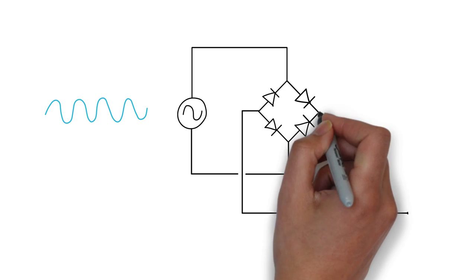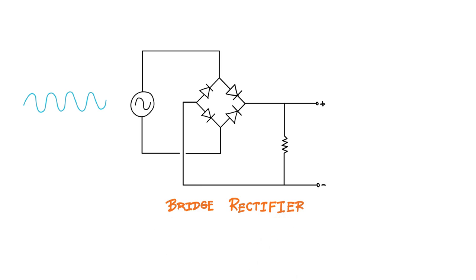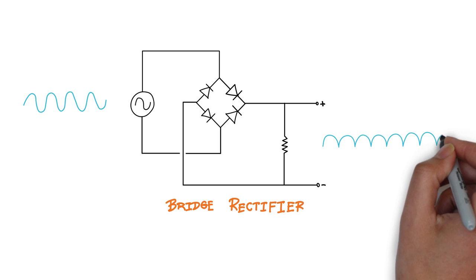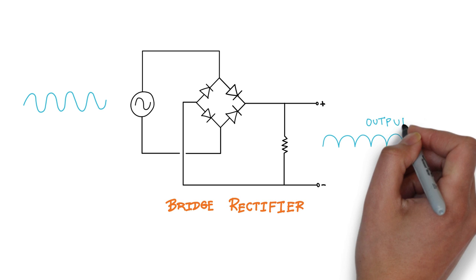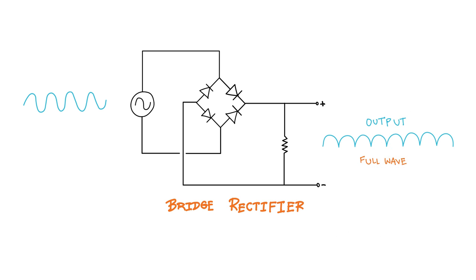There's a better type of rectifier circuit that uses 4 rectifier diodes. This is called a bridge rectifier. A bridge rectifier is more efficient than a half-wave rectifier, in that it allows both halves of the AC wave to pass through. The negative half of the wave is inverted so it becomes positive.